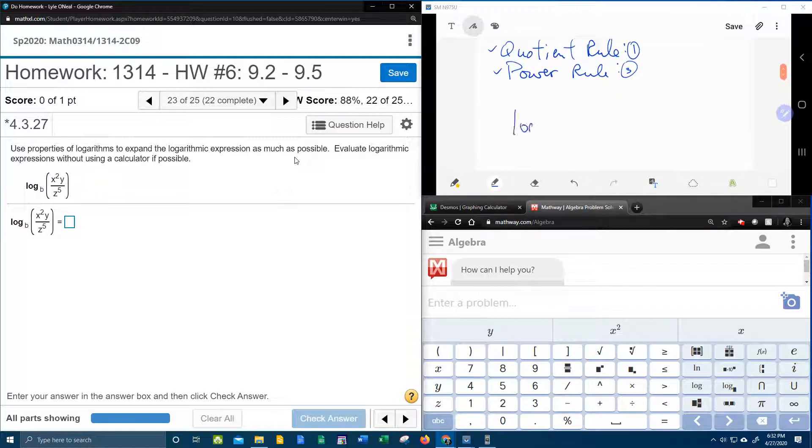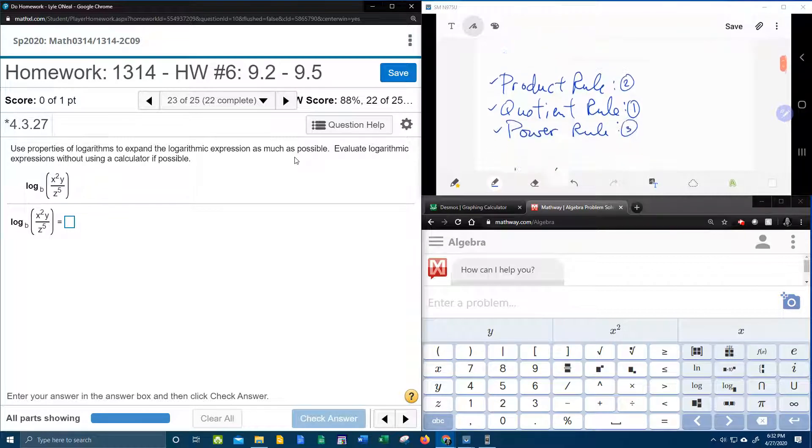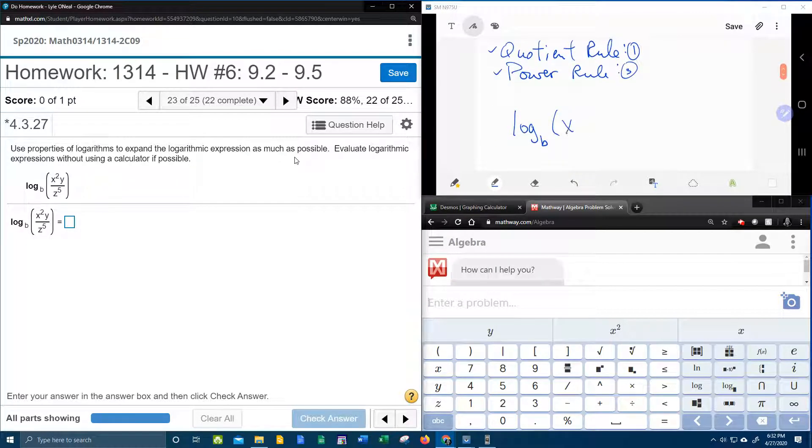Alright, so here we go first. We're going to have log base b of the numerator, x squared y. And remember I said that a fraction turns into subtraction. So it'll be minus log base b of the denominator, z to the fifth. That is the quotient rule. If you're wondering what just happened, that was the quotient rule, okay?